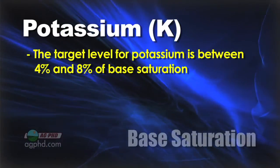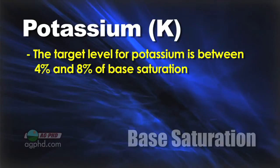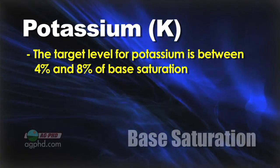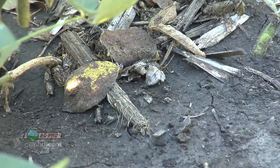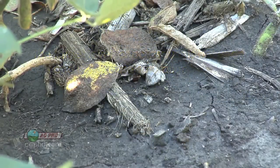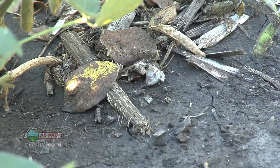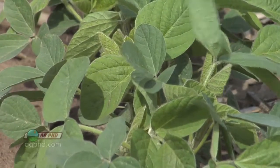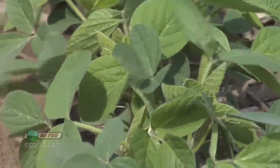We want to see potassium in the 4 to 8 percent range — it's incredibly critical. People often say 'I've got 250 parts per million of potassium, I'm in great shape,' but we don't necessarily know that. If your soil is overloaded on calcium and magnesium, that 250 parts per million of potassium might only give you a 2 percent base saturation. And then when you do plant tissue analysis later in the season, you're going to find potassium deficiencies.